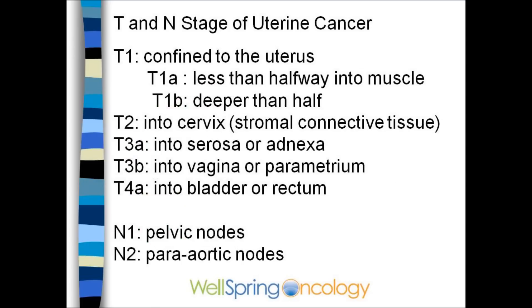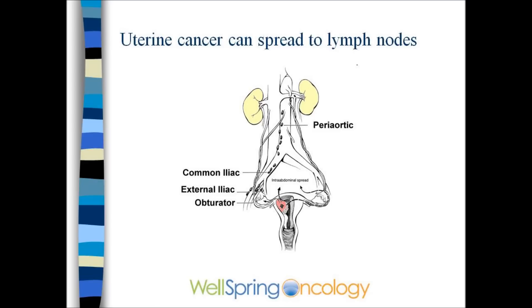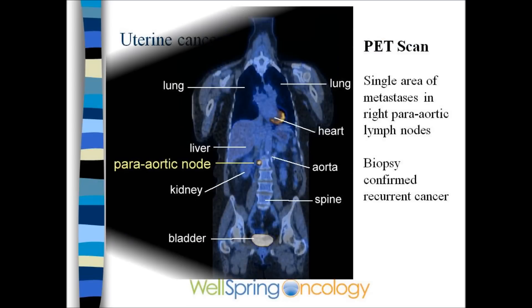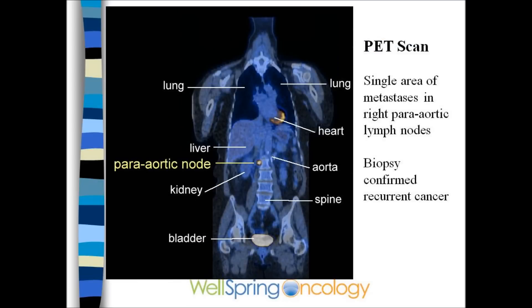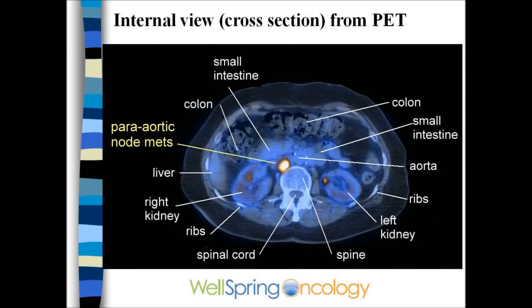Stage reflects the amount of deep muscle invasion and spread elsewhere, particularly lymph node spread, which is important. Uterine cancer can spread to both pelvic and para-aortic lymph nodes. Para-aortic means the lymph nodes that surround the aorta higher up in the abdomen. This can be seen nicely on a PET scan.